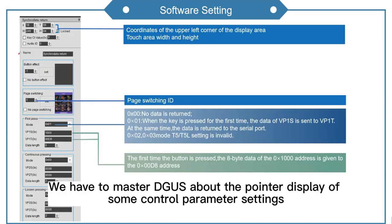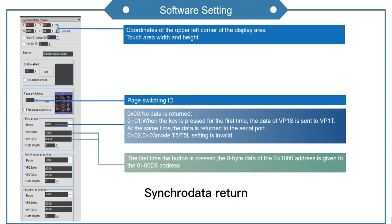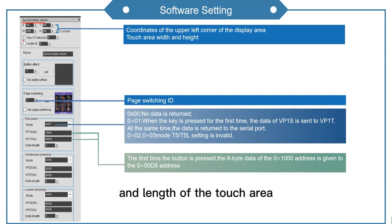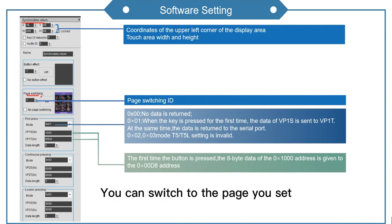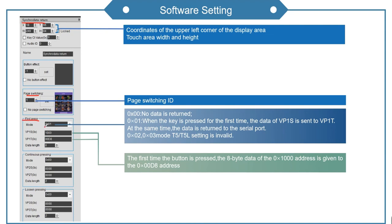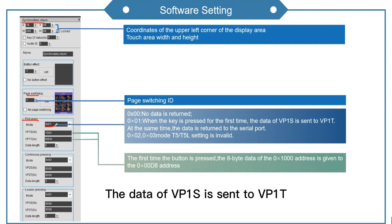Next, we need to master DWIN's pointer display control parameter settings. The touch control synchro data return parameters are used to set the coordinate position, width, and length of the touch area. This is the page switch button — you can switch to the page you set. Today we're going to use the first press button mode 01, where when the key is pressed for the first time, the data of VP1S is sent to VP1T.